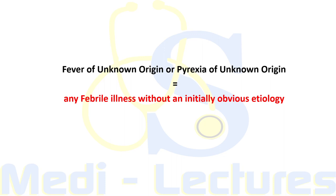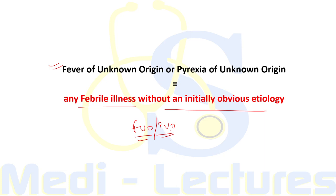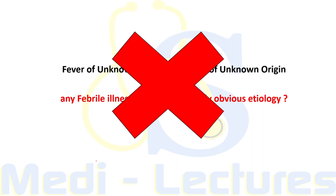A common mistake many of us commit is considering fever of unknown origin or pyrexia of unknown origin as any febrile illness without an initial obvious etiology. When a patient comes with fever without any region or system-specific symptom like cough or loose stools, we tend to write the diagnosis as PUO — but this is totally wrong practice.